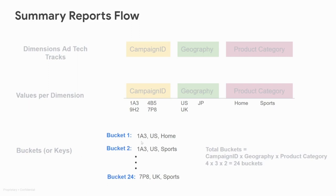A bucket takes one value from each of these dimensions. So if you look at bucket number one, we can see that it takes one campaign ID, the geography of US, and the product category home. Based on the number of values per dimension, the total number of buckets equals the values in the first dimension times the values in the second dimension times the values in the third dimension. For this scenario, that would be 24 total buckets that the ad tech plans to track. Now that we understand the idea of tracking dimensions and buckets, we can see how an ad tech would use this concept to generate actual aggregate reports, which then turn into summary reports.